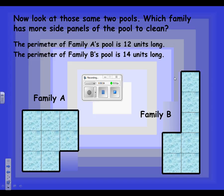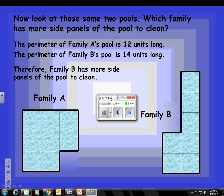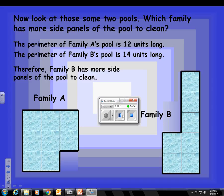Therefore, Family B has more side panels of the pool to clean. So, which one has more to clean? Well, Family B has more to clean. Make sure you get this down.